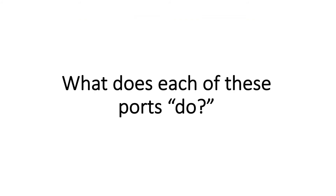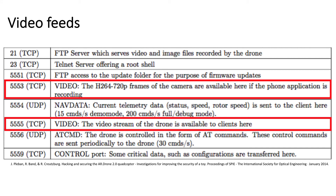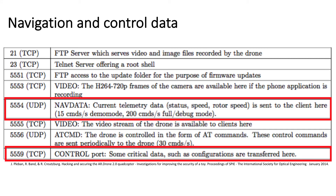Given those seven open ports, what do they do? They come in three categories. The first is for transferring data and remote access to the drone: port 21 provides a file transfer protocol server to move files between the controller and the drone, port 23 allows remote access to the drone, and port 5551 is another FTP port. The second category is for video feeds, associated with ports 5553 and 5555. Finally, ports 5554 and 5559 are for navigation and control data.